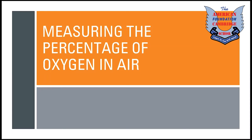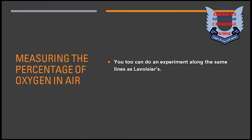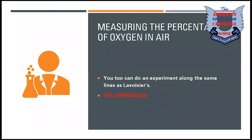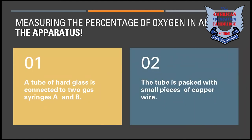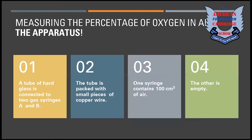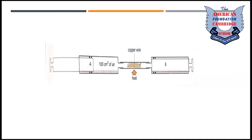Measuring the percentage of oxygen in air: you can do an experiment as scientists did in the lab. You will need a hard glass tube connected with two gas syringes A and B. The tube was packed with small pieces of copper wire. One syringe contained 100 cm³ of air and the other was empty. The heat was provided with the help of a Bunsen burner. When the A plunger is pushed, air is forced through the tube into B, and the oxygen in it reacts with the hot copper, turning it black.